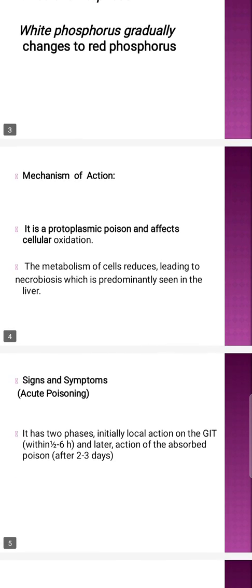Phosphorus is basically a protoplasmic poison that affects cellular oxidation. When it affects cellular oxidation, the cells undergo necrobiosis — cell death affecting metabolism. Necrobiosis will mostly affect the liver.